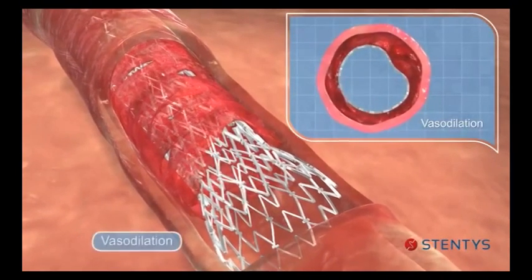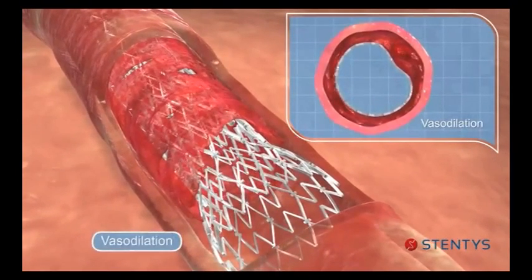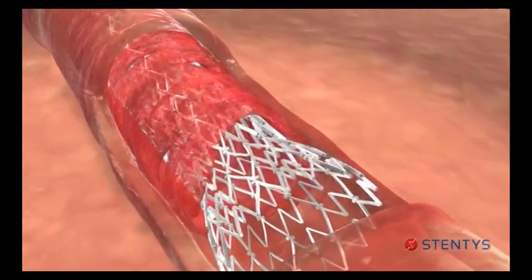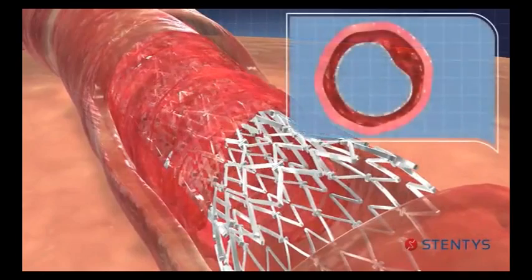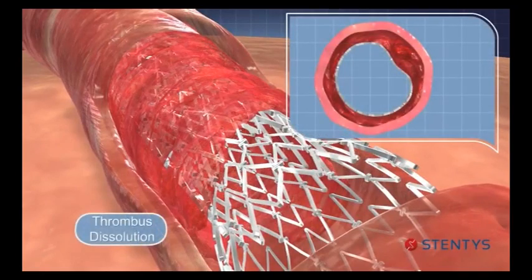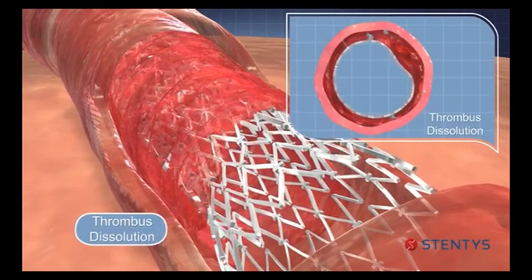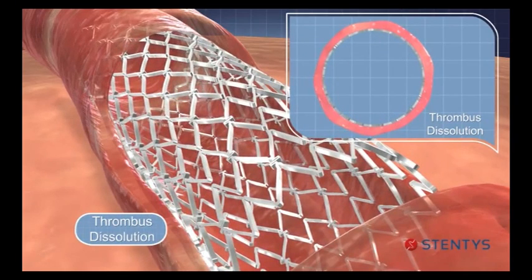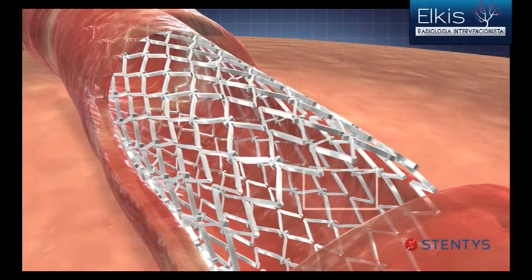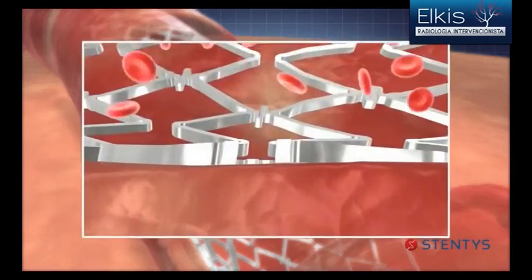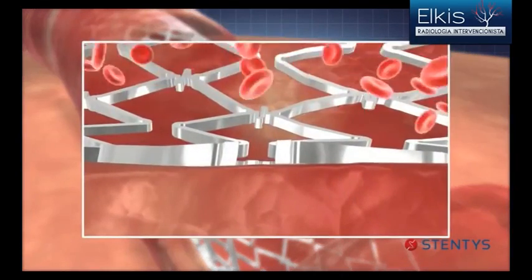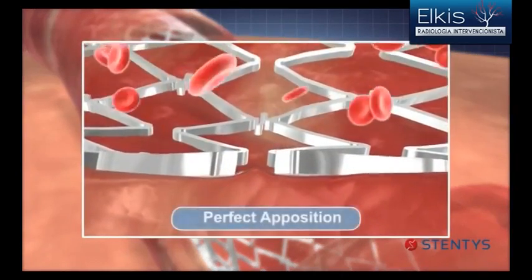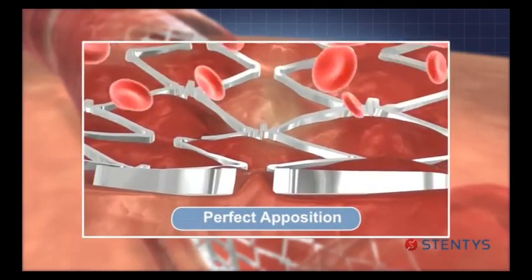As spasm is relieved, the vessel diameter increases and the stent follows in expansion, continuing its scaffolding of the artery. Finally, as the thrombus dissolves, the stent expands further to absorb the gap left by the dissolving thrombus, thus maintaining a perfect apposition throughout the remodeling process of the vessel.